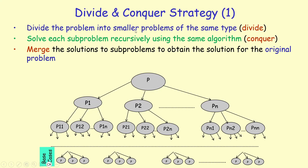This is called dividing the problem, or the recursive formulation of the problem. Now we recursively solve each of these subproblems — that's called the conquer part. When we recursively solve P1, which is the same type as P but smaller scale, P1 will be divided into sub-subproblems P11, P12, ..., P1n. Similarly, P2 divides into P21, P22, ..., P2n, and Pn into Pn1, Pn2, ..., Pnn.